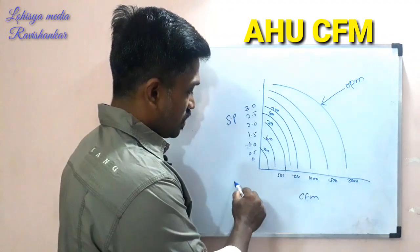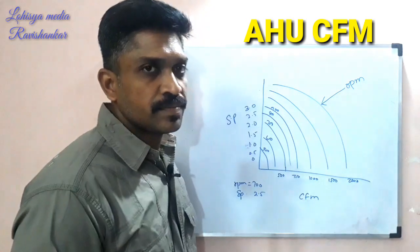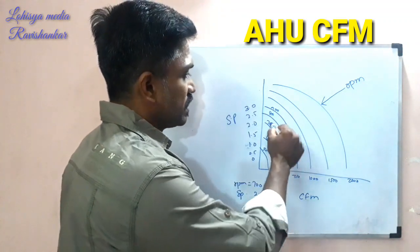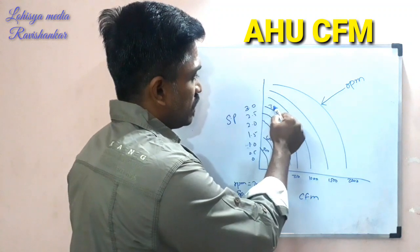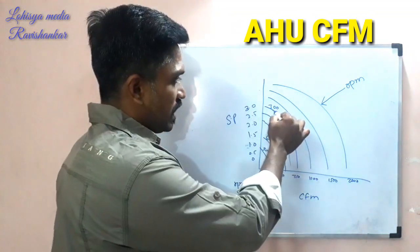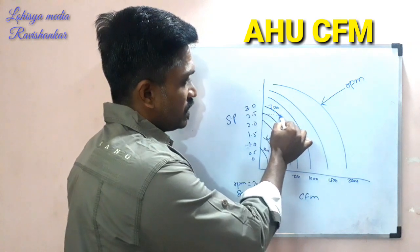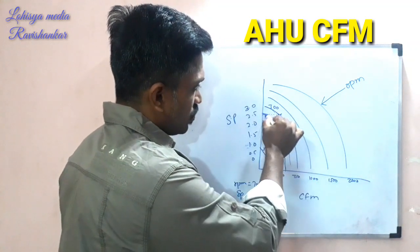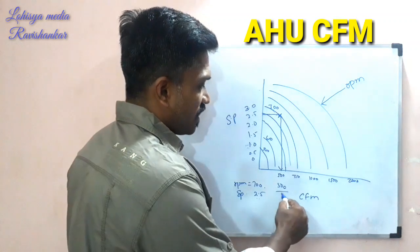From the chart, you get three values: RPM 700, static pressure 2.5. Looking up these values in the table, the AHU is 500 CFM.